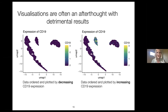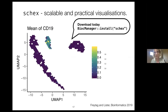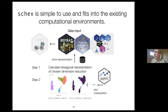I want to talk briefly about visualizations. Look at these two pictures of the same dataset — the only difference is data ordering. One is ordered by decreasing CD19 expression and the other by increasing CD19 expression. In one you wouldn't know the middle cluster is a B cell population, while in the other it's pretty clear. This overplotting becomes a major problem with millions of cells. So I developed SC-hex, which summarizes data points in hexagonal regions and gives you the mean value. You can install it via Bioconductor, and it works with both the SingleCellExperiment class and Seurat, so it integrates easily into your workflows.